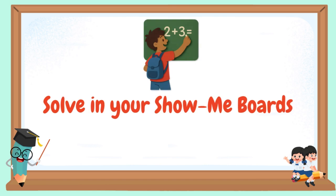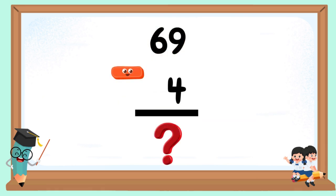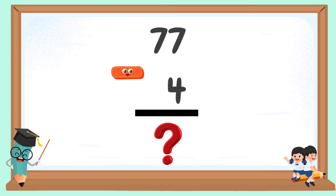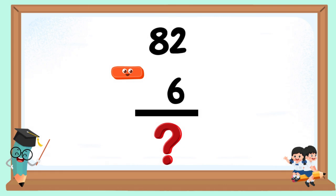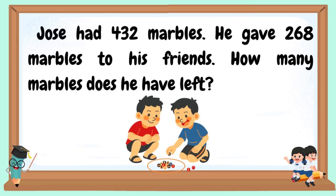Solve in your show me boards. Jose had 432 marbles. He gave 268 marbles to his friends. How many marbles does he have left?